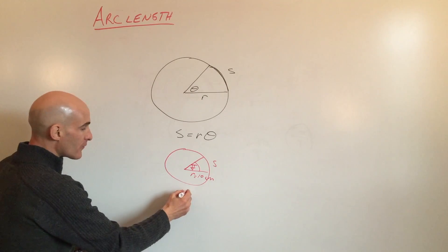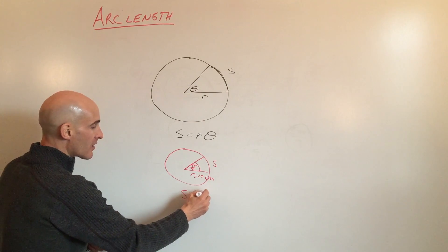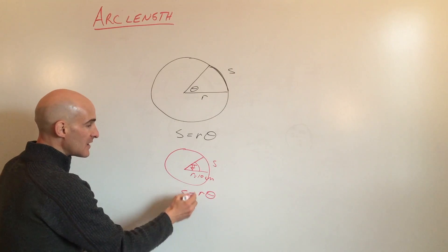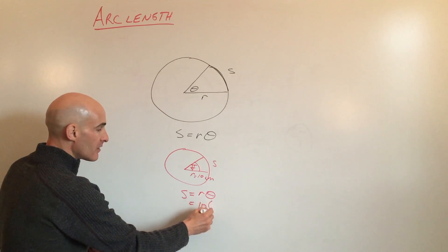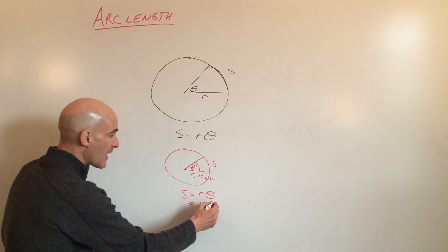So what we're going to do is we're going to use our formula S equals R theta. The radius is 10. The angle is pi over 4.